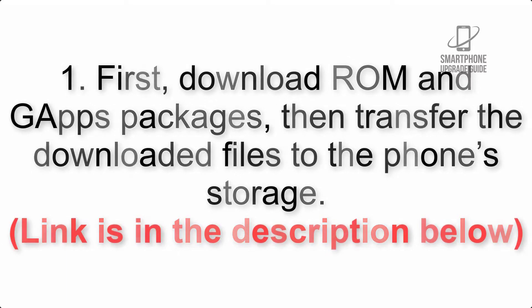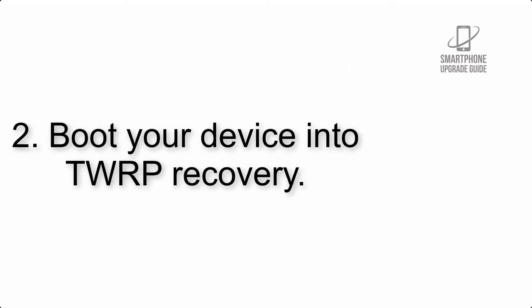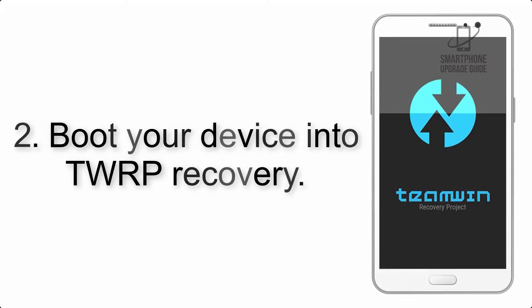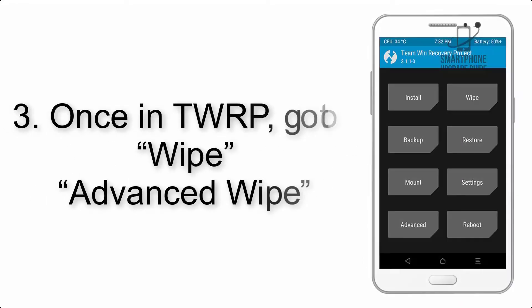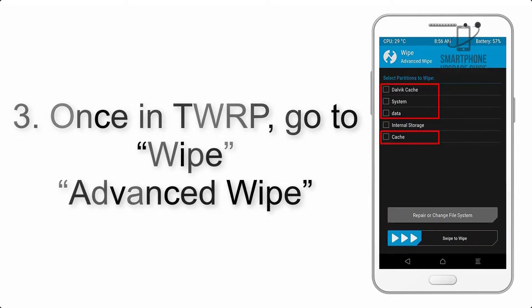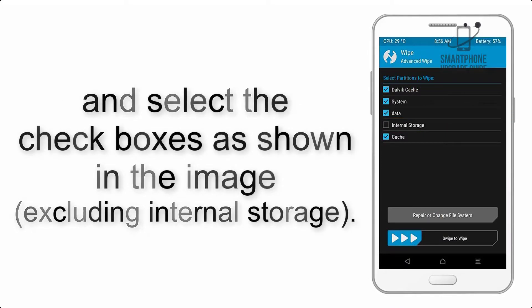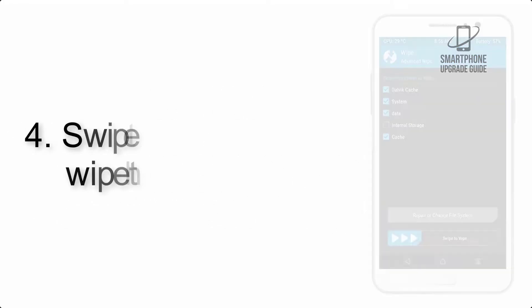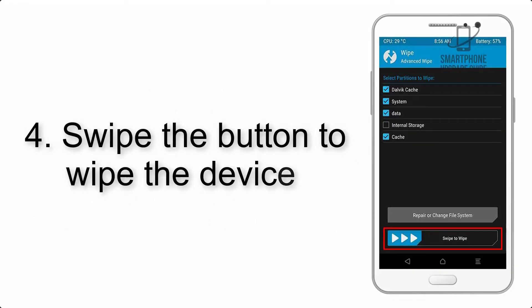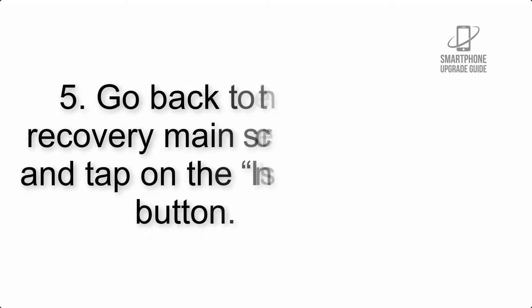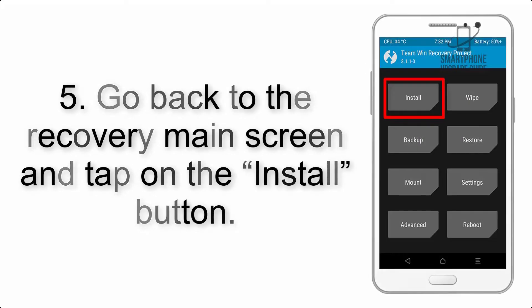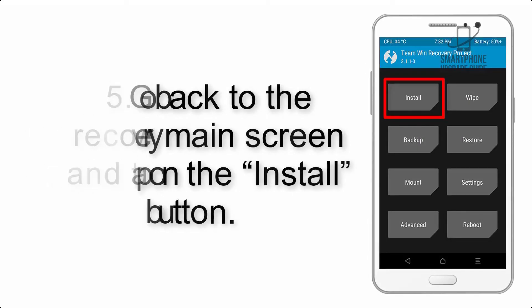Step 2: Boot your device into TWRP recovery. Once in TWRP, click on Wipe, then Advanced Wipe, and select the checkboxes as shown in the image, excluding internal storage. Step 4: Swipe the button to wipe the device. Step 5: Go back to the recovery main screen and tap on the Install button.